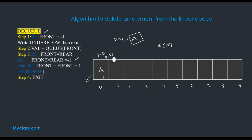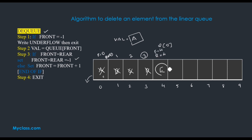It is not necessarily position 0. For example, assume rear is pointing to 4 and front is pointing to 0. First we delete 'a', so front becomes 1. Then delete 'b', front becomes 2. Then delete 'c', front becomes 3. Then delete 'd', front becomes 4. Now front equals rear, meaning only 'e' remains in the queue. At that time we set front equal to rear equal to minus 1, because after deleting 'e' our queue is empty. Otherwise the normal condition is front equals front plus 1. End of the if structure — exit from the algorithm.